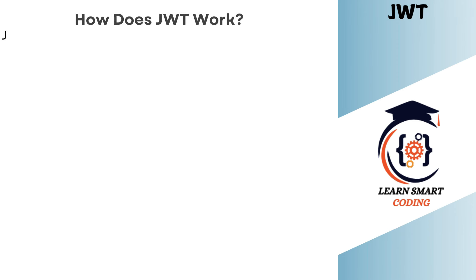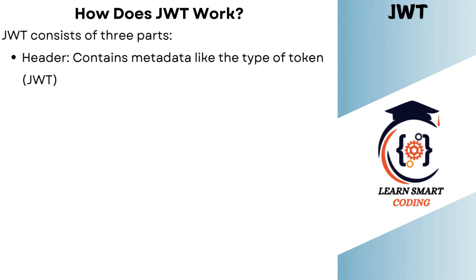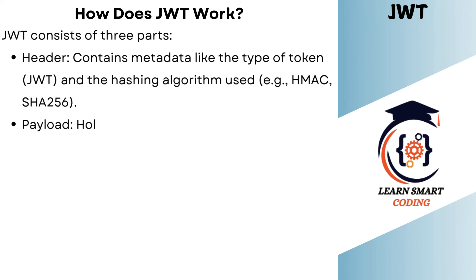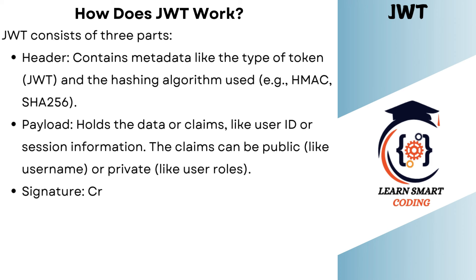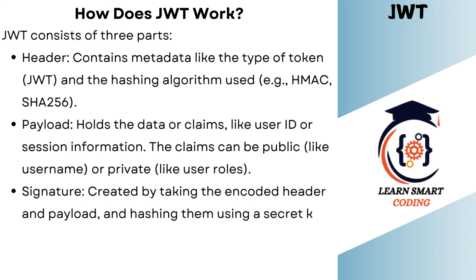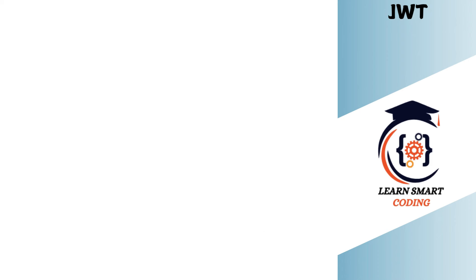How does JWT work? JWT consists of three parts: Header, Payload, and Signature. The Header contains metadata like the type of token and the hashing algorithm used — in our case, HMAC SHA-256. The Payload holds the data or claims like user ID or session information. Claims can be public like username, or private like user roles. The Signature is created by taking the encoded header and payload and hashing them using a secret key, ensuring the data hasn't been tampered with.